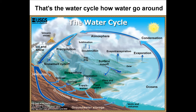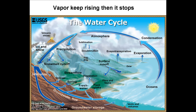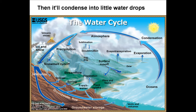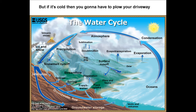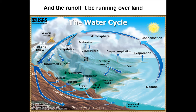Vapor keep rising then it stops, then it'll condense into little water drops — put them all together, make a cloud. Get real heavy so they gotta come down. If it's hot out it'll be a rainy day, but if it's cold then you're gonna have to plow your driveway. And the runoff, it be running over land, polluting all the rivers and the lakes and oceans.